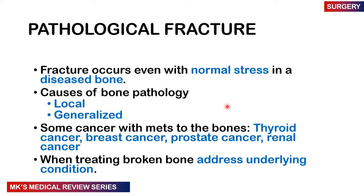The last etiological group is pathological fractures. Here the fracture occurs with normal or trivial force in a diseased bone. The pathologies affecting bone may be localized or generalized — cancers that metastasize to bones include thyroid, breast, prostate, and renal carcinoma. When treating the broken bone you should also address the underlying condition, because otherwise the patient will continue having fractures with trivial trauma to the diseased bone.